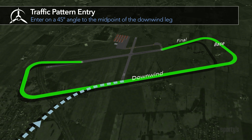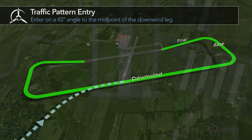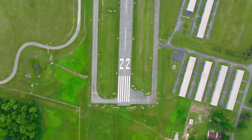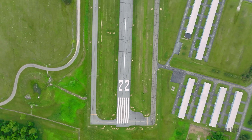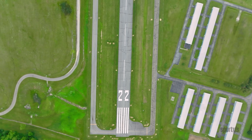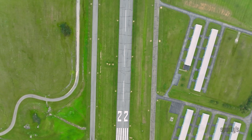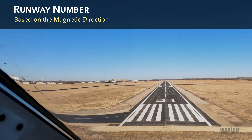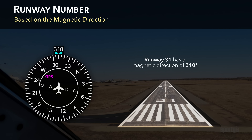We'll cover traffic pattern entry procedures in more detail later in the course. In the U.S., most airports use the Federal Aviation Administration-approved system to mark runways and taxiways. This assures safety and consistency for pilots flying into any airport. Runway numbers are determined from the approach direction. The runway number is the runway's magnetic direction rounded off to the nearest 10 degrees and dropping the last zero.